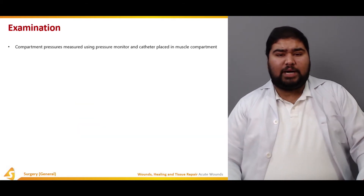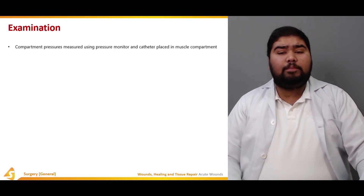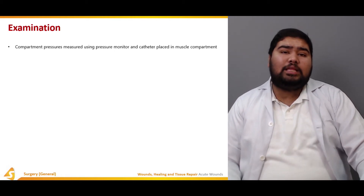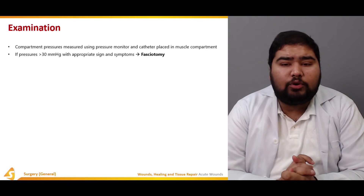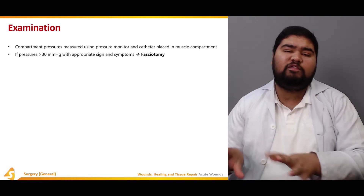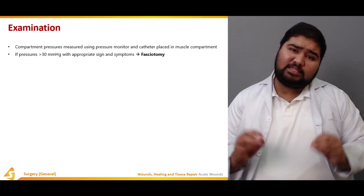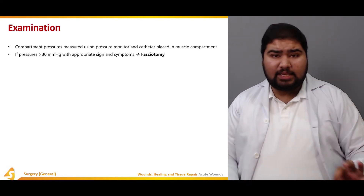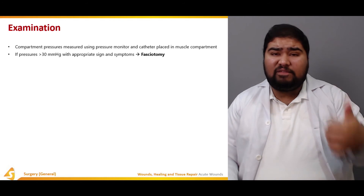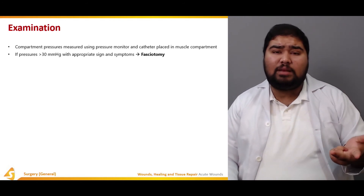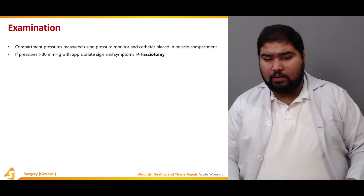To examine a patient with compartment syndrome, compartment pressures should be measured using a pressure monitor and catheter placed in the muscle compartment. If the pressure is more than 30 mmHg, that is the pressure at which the patency of the vessels is lost. A pressure greater than or approaching 30 mmHg with appropriate signs and symptoms — severe pain, pain on flexion, absence of distal pulses, and a rock-hard limb — indicates you should move for fasciotomy.